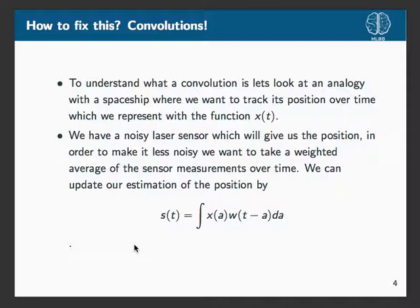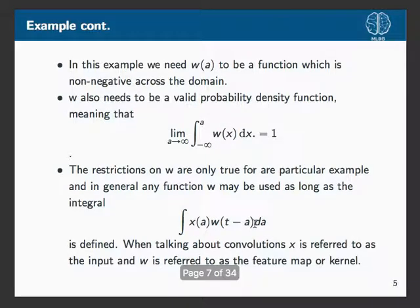We want to average over all times up to and including the point we're looking at. We can do that with this integral formulation: our position at time t equals the integral of the sensor reading times a weighting function. The whole point of the weighting function is that more recent measurements are more likely to be accurate, and older ones less so.